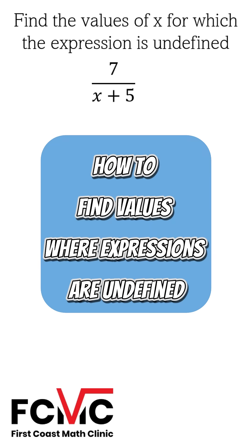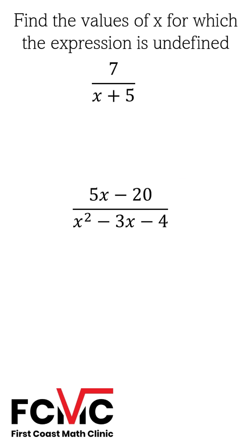How do we find the values that make our expression undefined? Our first expression is 7 over the binomial x plus 5. We have to look specifically at our denominator, and our expression is undefined where that denominator is equal to 0. So we're going to set x plus 5 equal to 0.